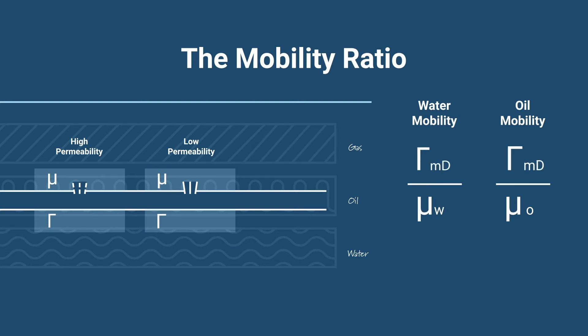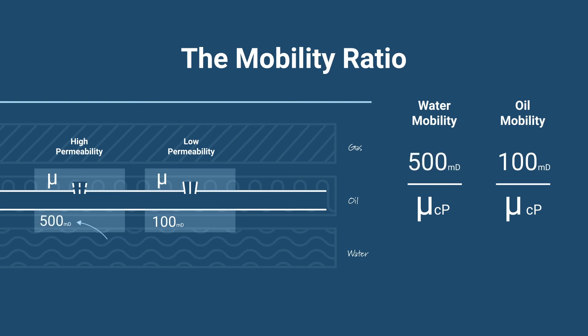Permeability is measured in the unit of milli-darcy, and viscosity is measured in the unit of centipoise. Let's say that in this low permeability zone we have 100 milli-darcy, whereas in this high permeability zone we have 500 milli-darcy — a typical permeability difference in a reservoir. The water viscosity is 0.5 centipoise, and for simplicity the oil viscosity is 5 centipoise.